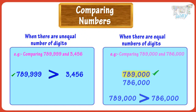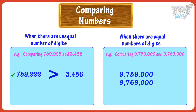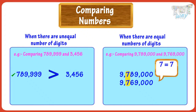Let's take another example. We have to compare these numbers and both have the same number of digits. Let's start comparing digits from the left. In whichever number we get the bigger digit first, that number will be bigger. Comparing the leftmost digits, both are the same. So compare the next digits — both are the same again. Compare the next digit: eight is more than six, so this number is the bigger number.